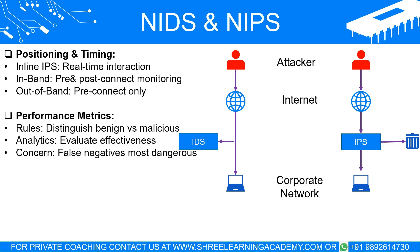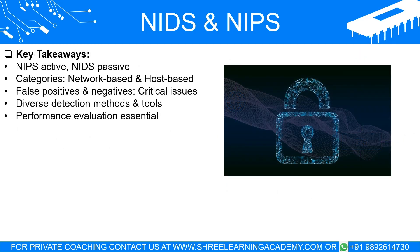Evaluating IDS/IPS performance — Importance of rules: Rules in IDS help distinguish between benign and malicious traffic, similar to how traffic rules distinguish safe from unsafe driving behavior. Analytics: Just like reviewing security footage to gauge the effectiveness of physical security, IDS analytics help evaluate performance by assessing true and false positives and negatives. The critical concern of false negatives: While false positives waste resources, false negatives are far more dangerous — this is when malicious activity goes undetected, allowing harm to occur without any warning.